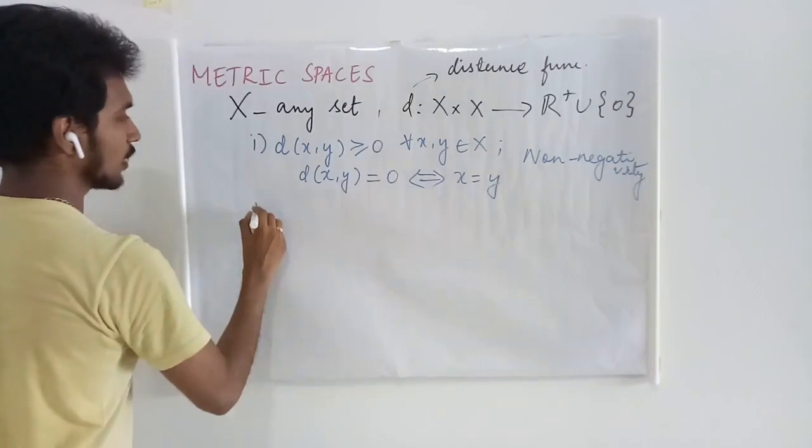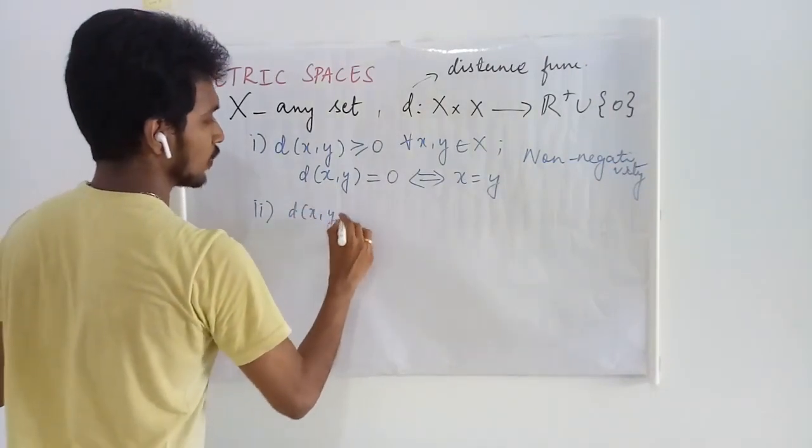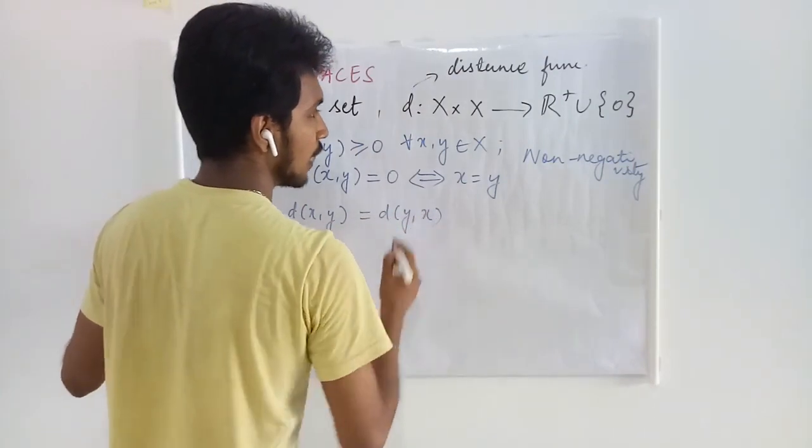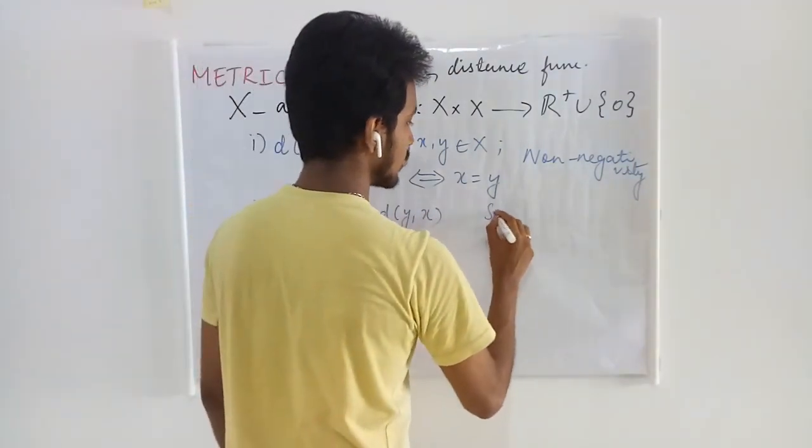The second condition is D of x comma y is the same as D of y comma x, and this condition is known as symmetry.